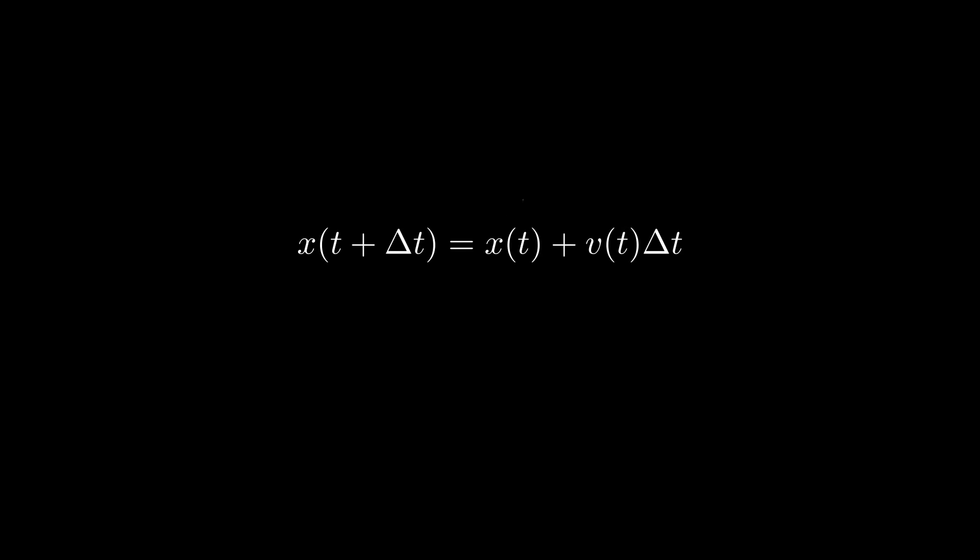Something else you'll notice is this last error term, representing the difference between a realistic value and our approximated value. For reference, the Euler method had a quadratic error term, so this is a welcomed improvement. This is known as Verlet integration, and is the whole point of this video.